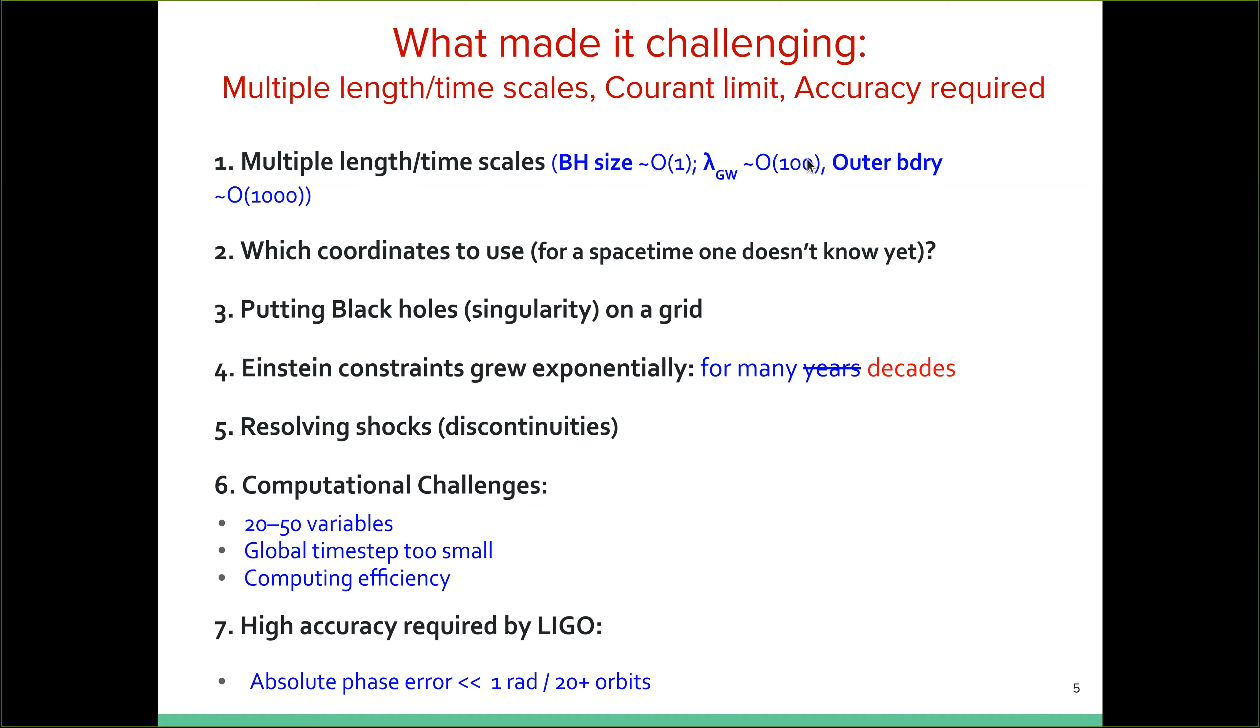Because if we take the small black hole to be our size of order one, then the distance between the two black holes may be of order 10, the wavelength of emitted waves, maybe of order a hundred. And we want to put the outer boundary of our simulation domain at least 10 times outside 10 times lambda GW outside of the system. So as you can see, we have three to four orders of magnitude in length scales to resolve. Then it wasn't known exactly what coordinates to use for a space time, which we don't know yet, right? Because that's the whole goal of evolving. We didn't know how the field rather does didn't know what the space time would look like near the merger of two black holes. Then of course, putting a singularity on a grid can be troublesome for obvious reasons. And this was a challenging problem.